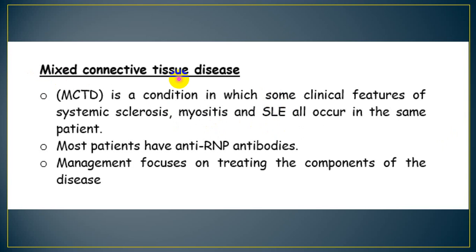This patient has mixed connective tissue disease, but if the main or heaviest disease involvement is systemic sclerosis, we treat it as systemic sclerosis. While if the patient presents mainly with myositis and proximal muscle weakness, we treat it as myositis — polymyositis or dermatomyositis. Thank you very much.